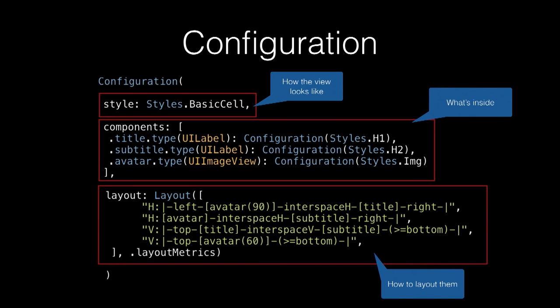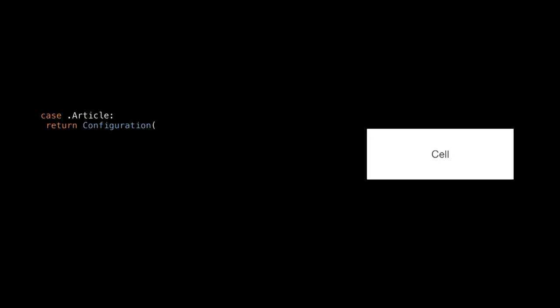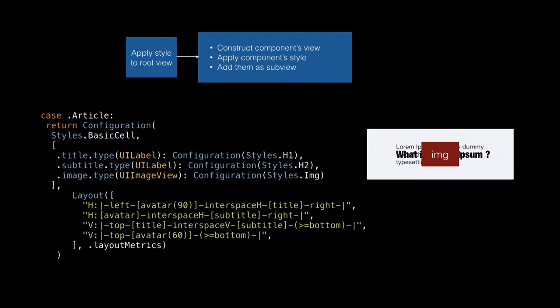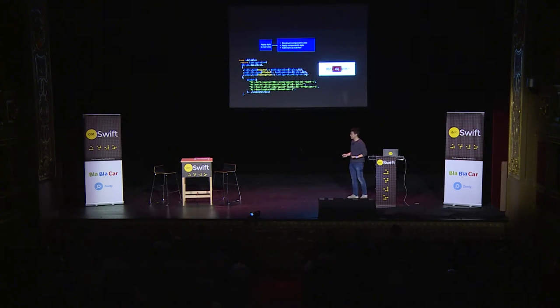We are describing the whole UI — describing it declaratively. To configure a cell based on the configuration object: first, we apply the style to the root view, which is our cell. Then we construct the component views one by one — title, subtitle, and image. Then we have everything we need to do our layout, so we just do it. And we are done.